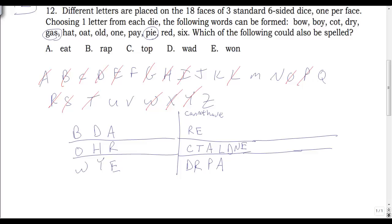PAY: Y is placed, so P and A can't be on that die. A can't be on two other dice, so A must go on the third die. RED: D is on the third die; no R on first or second die, so the middle die has R. E is not on the first or second die, so E goes on the third die. Continuing to fill in letters from each word.